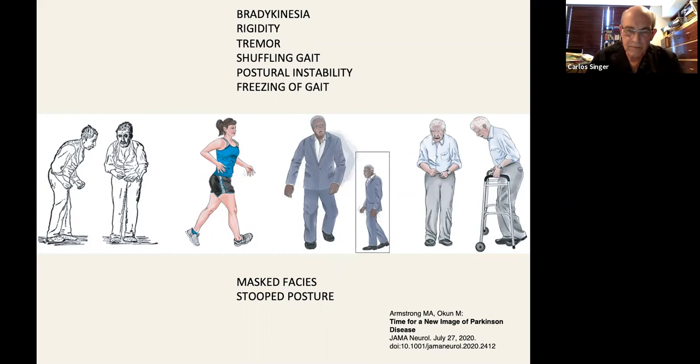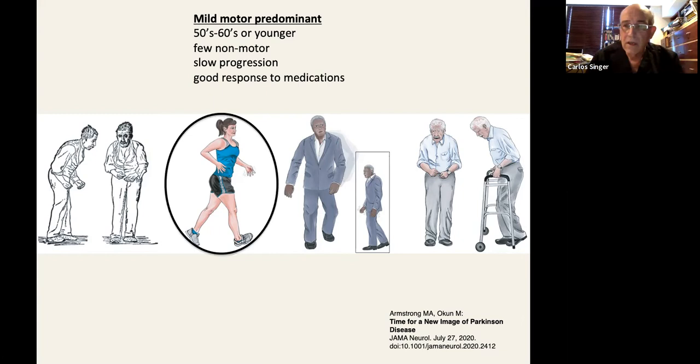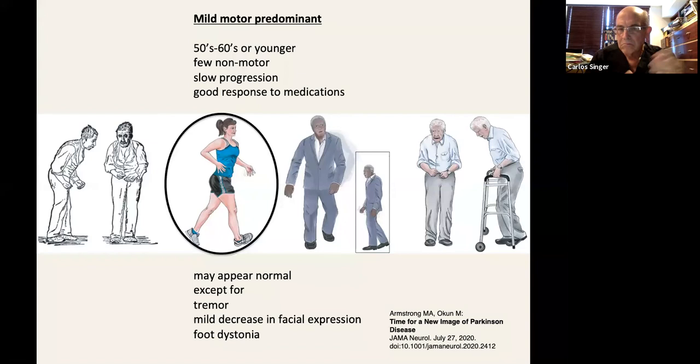There is one presentation which the authors have called mild motor predominant. And what they try to show is somebody in their 50s, 60s, or even younger. They have few non-motor symptoms. They have slow progression. They have a very good response to medications to the point that they may appear normal, except for tremor, maybe some mild decrease in facial expression, or for dystonia.